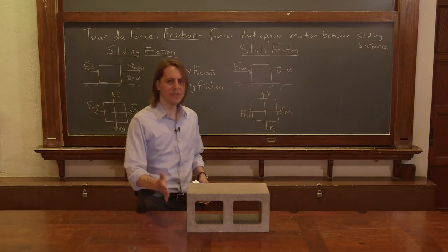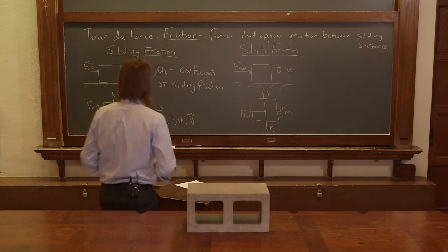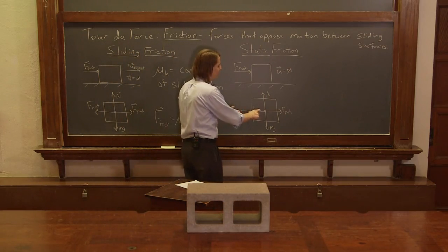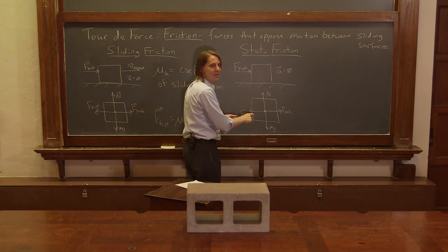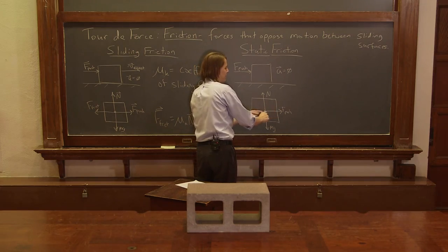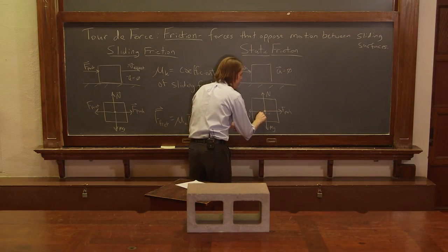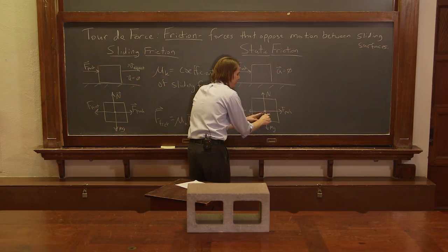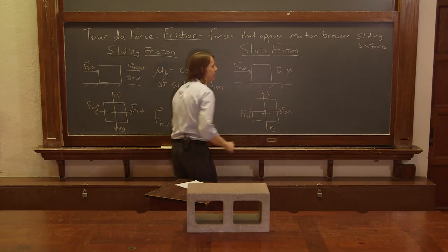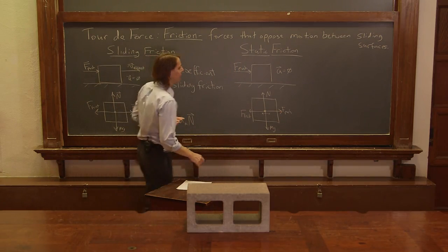I pushed with different amounts of force and it still pushed back. So this is a case, kind of like a normal force, where the friction force changes. It always pushes back just enough to cancel — it opposes the push force just enough so they always balance. If I push really soft, there's a small friction force. If I push really hard, there's a larger friction force. So it's like there's a variable amount.